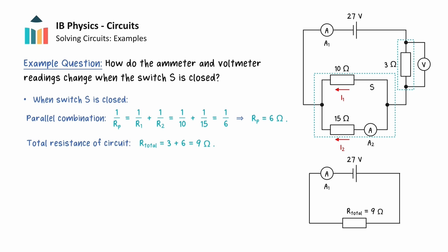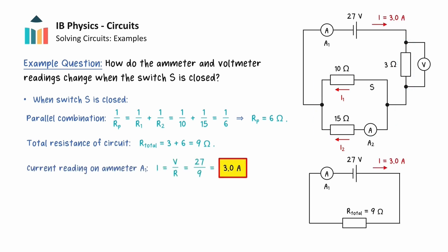We can then calculate a current of 3 amps around the circuit, which will be the reading on ammeter 1. The reading on the voltmeter can be calculated by multiplying the current in the 3 ohm resistor by its resistance, giving a value of 9 volts.